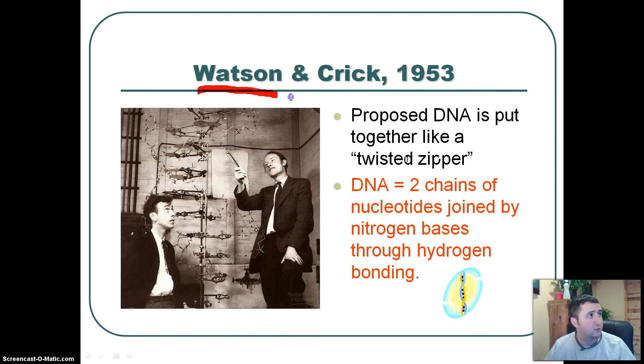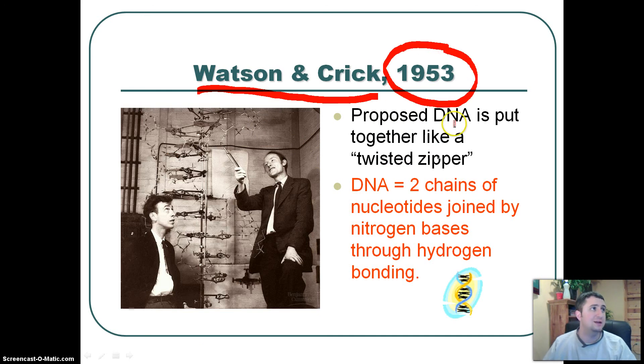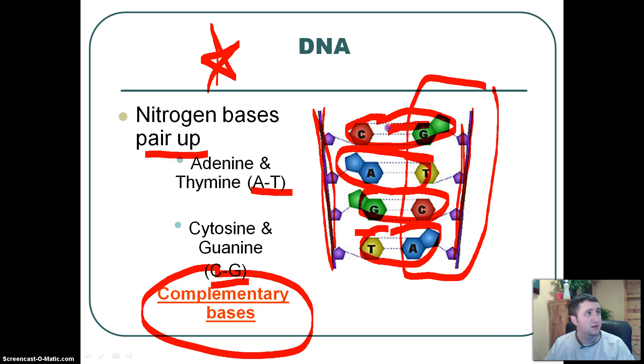Watson and Crick were two gentlemen, two really smart gentlemen that came up with the idea of what DNA looks like in 1953, so that's almost 60 years ago. They proposed that DNA is twisted like a zipper. Two chains of nucleotides joined by nitrogen bases through hydrogen bonds. So the bonds in between, I'm going to go back to this for a second, these bonds that are in between the G and the C are what's known as hydrogen bonds. They're not very strong, but nonetheless, they hold that whole DNA together.